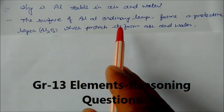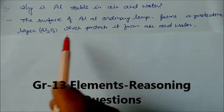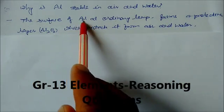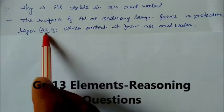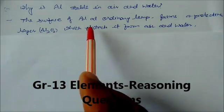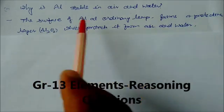At ordinary temperature, aluminum forms a protective layer of Al2O3 on its surface which protects it from air and water. That's why aluminum is stable in air and water.